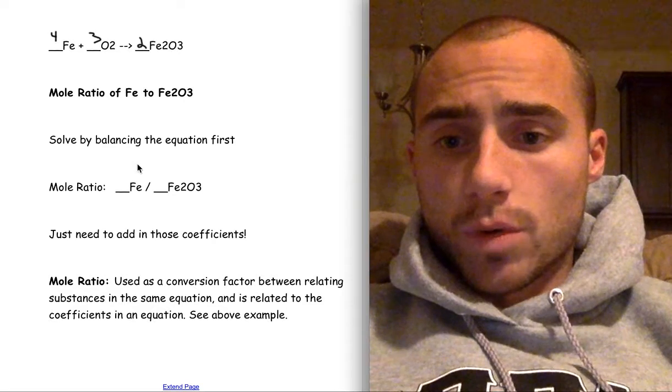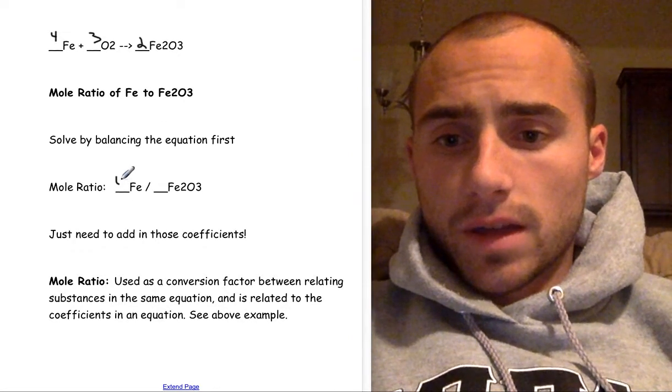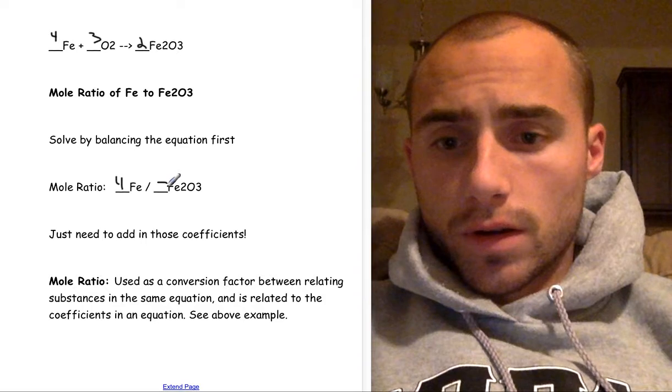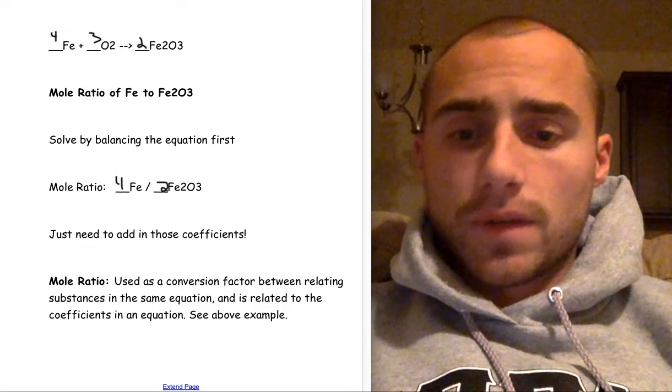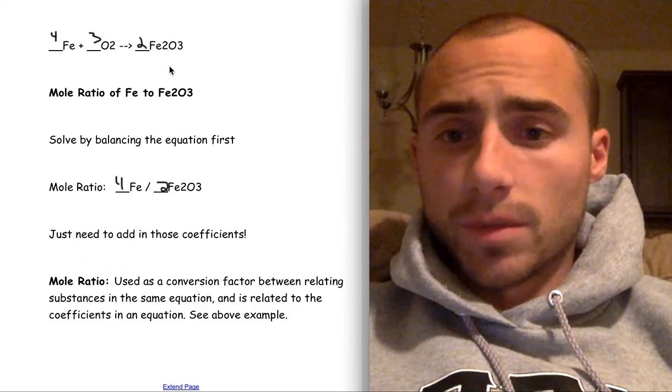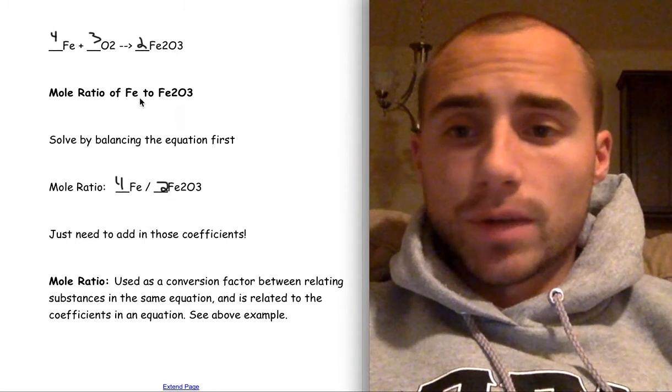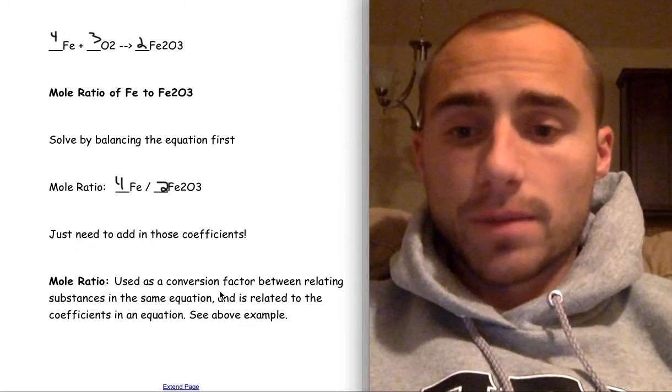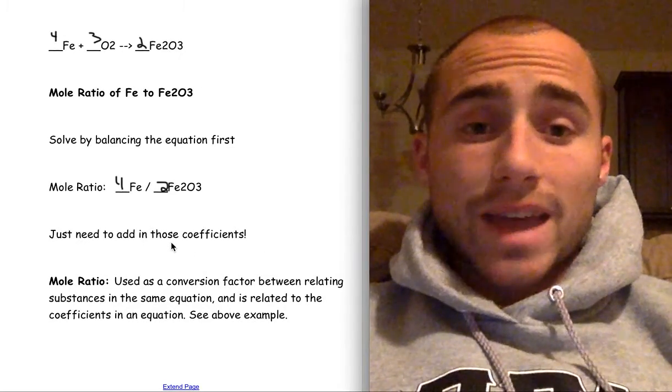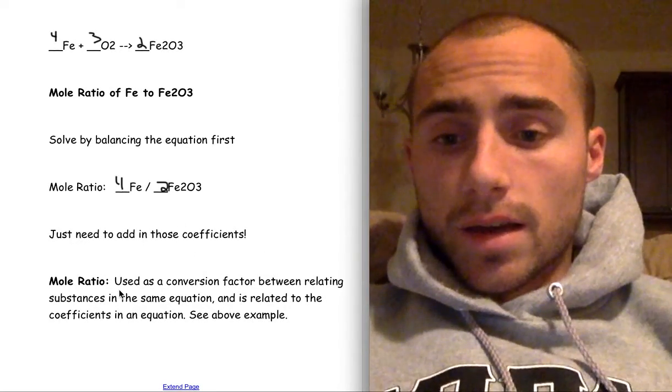Therefore, the mole ratio would be 4Fe over 2Fe2O3 and I'm getting those numbers directly from the balanced equation. So that's how you set up a mole ratio. You just balance the equation and then get the numbers directly from the balanced equation. I just need to add in the coefficients.